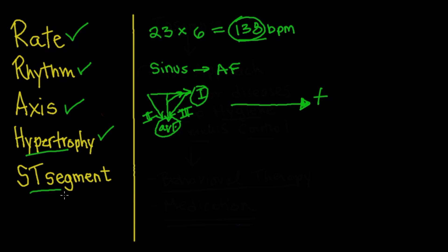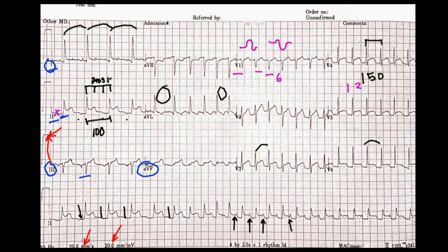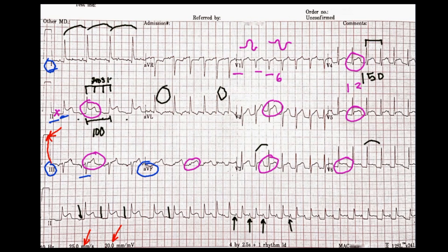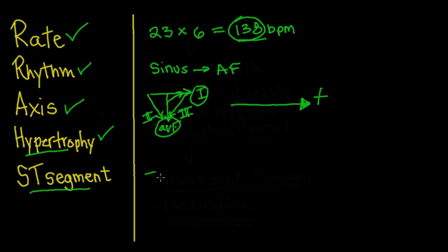The next and last thing is ST segments — and that's really where the key is. We're seeing big-time ST segment elevation in lead II, V2, V3, V4, V5, V6, lead III, and a bit in AVF. We're seeing it all over the place. It's not in any one particular distribution. When you see global ST segment elevation throughout all the leads, the one big thing you've got to think about is pericarditis.